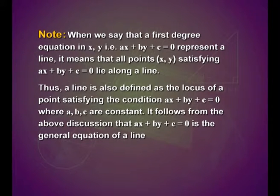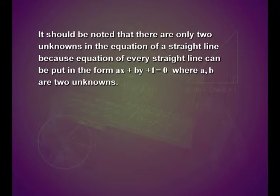Thus, a line is also defined as the locus of a point satisfying the condition Ax plus By plus c is equal to 0, where a, b, and c are constants. It follows that Ax plus By plus c equal to 0 is the general equation of a line. It should be noted that there are only 2 unknowns in the equation of a straight line, because every straight line can be put in the form Ax plus By plus 1 equal to 0, where a and b are the 2 unknowns.